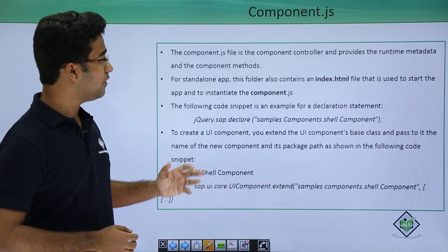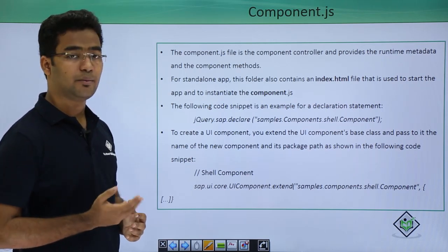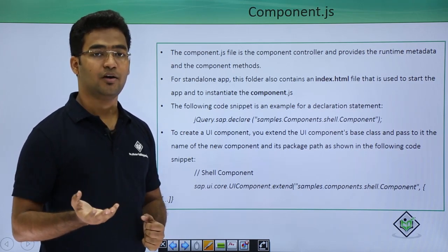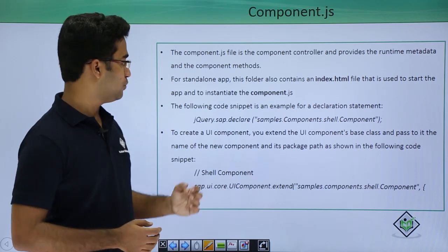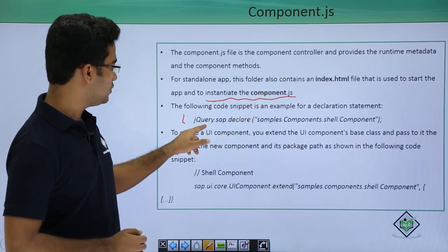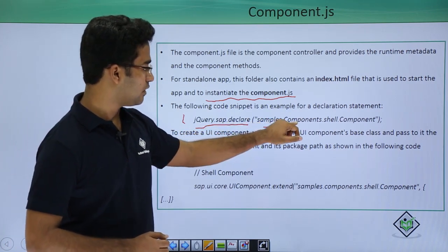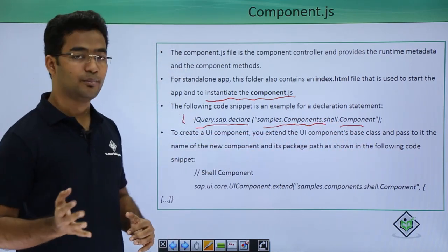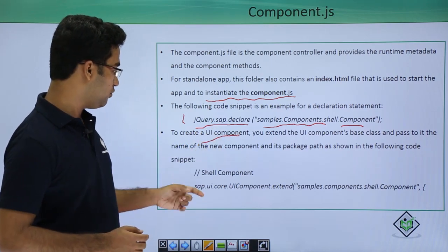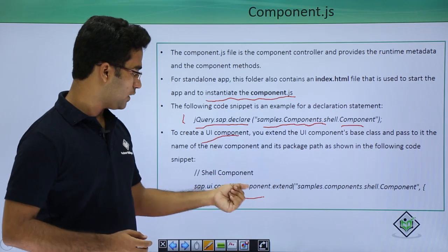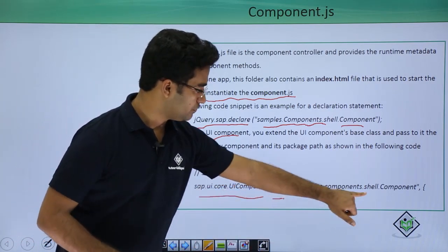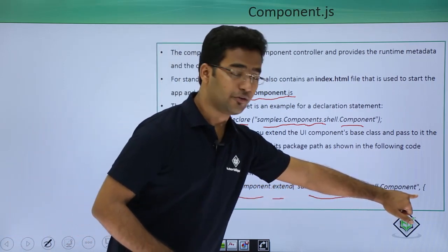The component.js file is the component controller and provides runtime metadata and component methods. For a standalone application, the index.html file is where control moves first and then flows to the component.js file. The basic code snippet uses jQuery.sap.declare with the namespace — for example, samples.component.shell.Component — and to create the UI component, you extend it using sap.ui.UIComponent.extend, passing the namespace, shell, and component file name.